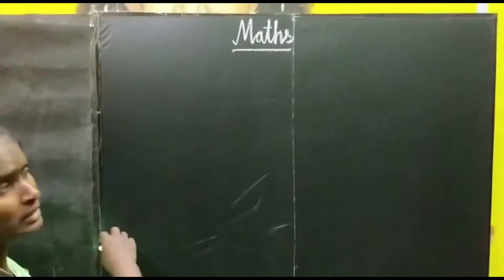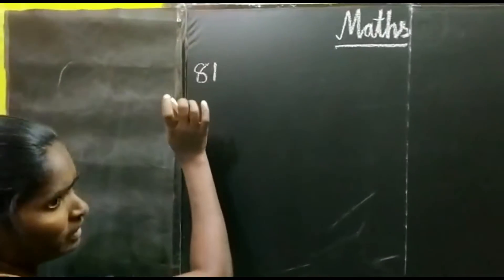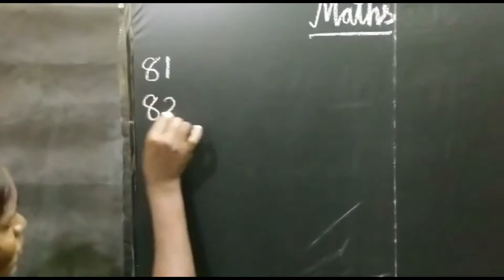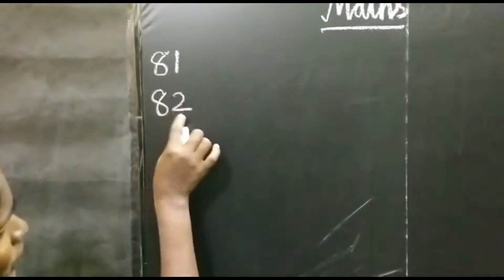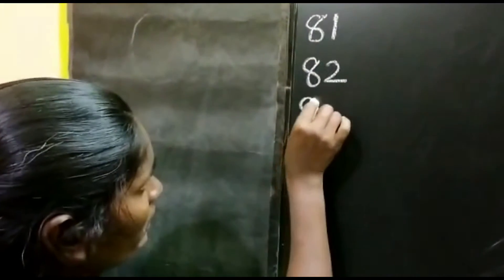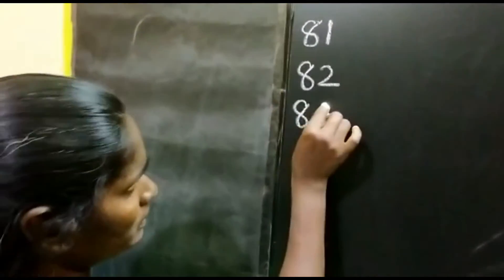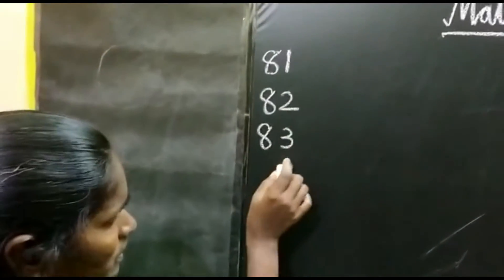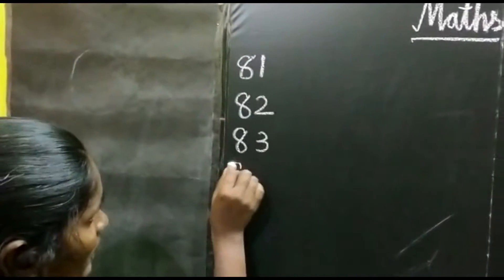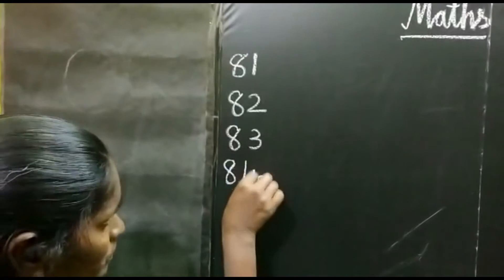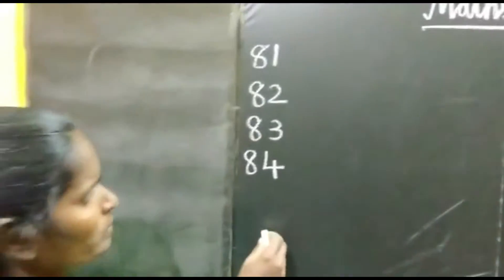First I am going to teach the numbers. 81. 8, 1. 81. 8, 2. 82. 8, 3. 83. 8, 4. 84.